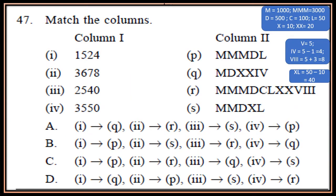Question 47: Match the columns. Some numerical values are given in column 1. You have to match them with their correct Roman values in column 2. See the hint: M is 1000, so MMM is 1000 + 1000 + 1000 = 3000. D is 500. C is 100. L is 50. X is 10 and 2X is 20. V is 5, so IV is 5 minus 1 = 4. VIII means 5 plus 3 = 8. XL is 50 minus 10 = 40. Any smaller value appearing before a greater value will be subtracted from that value.